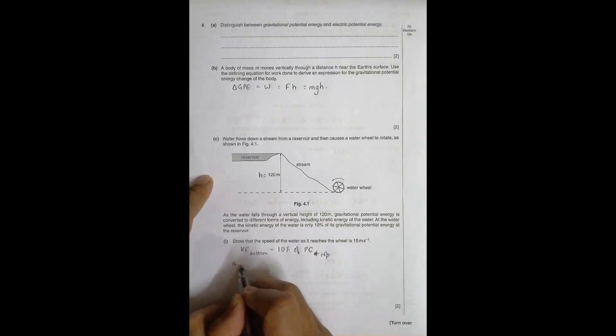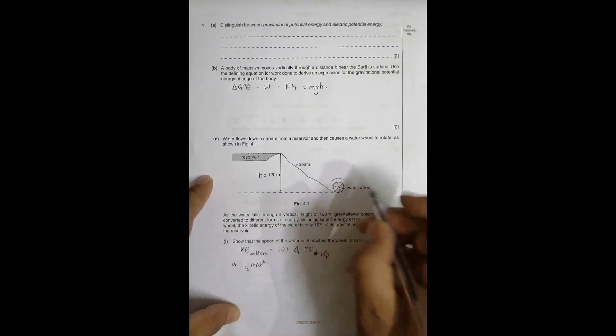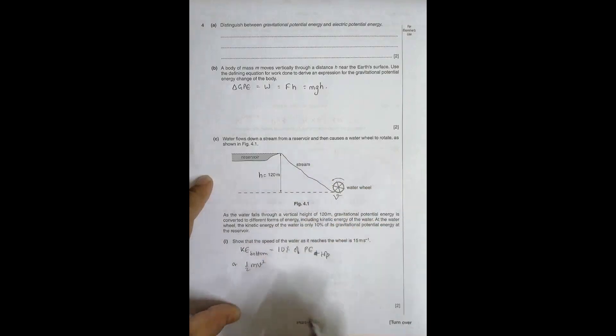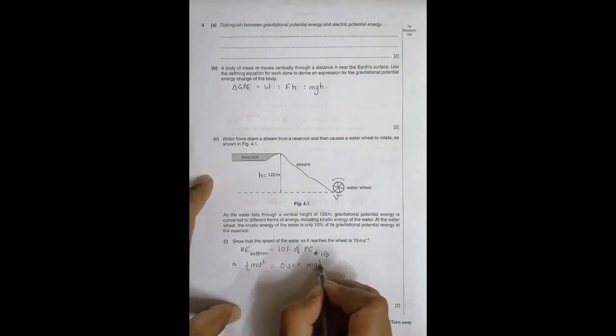So which means that, or I can say, 1 by 2 mass into v square, where v is the velocity here, is the velocity of water here, is equal to 0.10 into mgh. So m cancels.